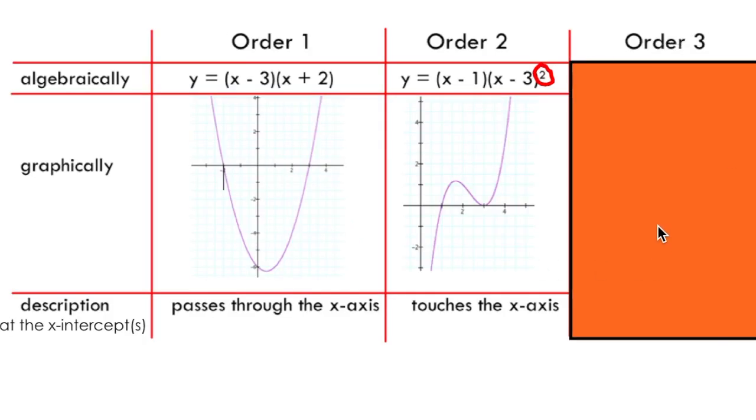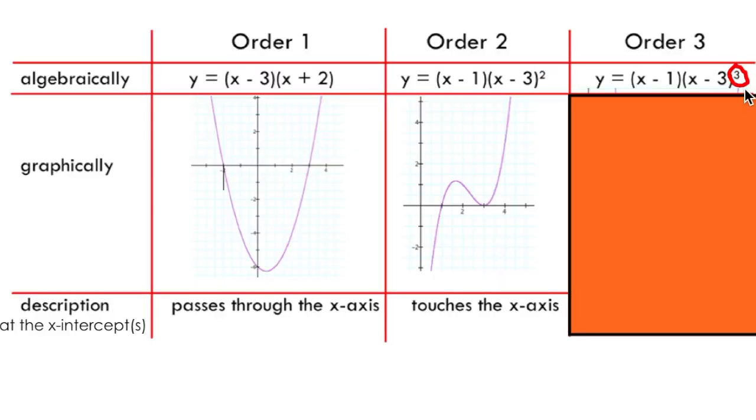Looking at order 3, you can likely predict what you'll see when we look at an equation of a polynomial with an x-intercept of order 3. I'm sensing a pattern here. That's right. An exponent of 3 indicates an x-intercept of order 3.